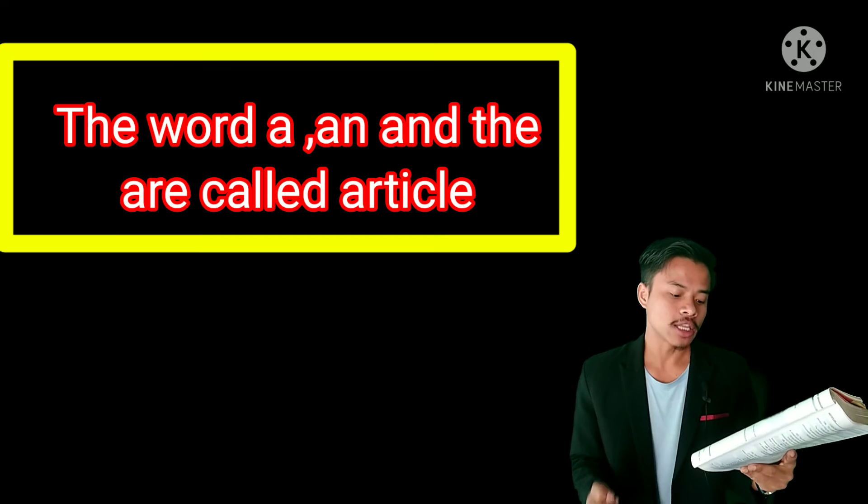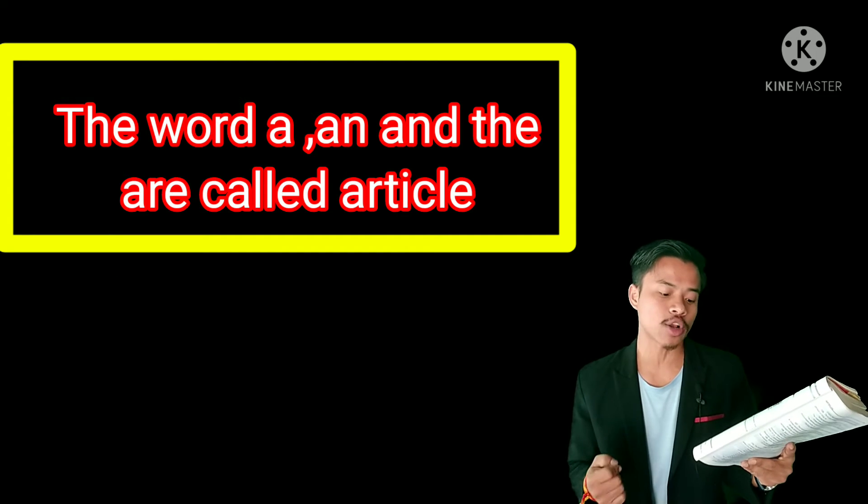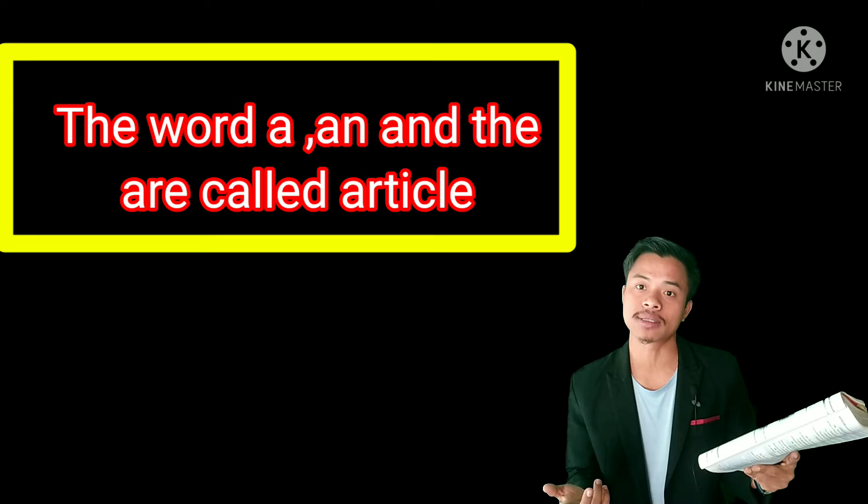First, the words 'a', 'an', and 'the' are called articles. A, an, and the are called articles — this is what we call them. They come before nouns.